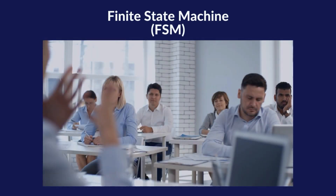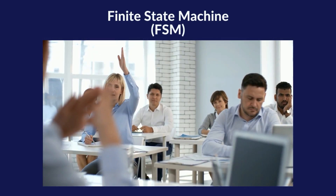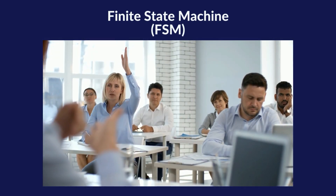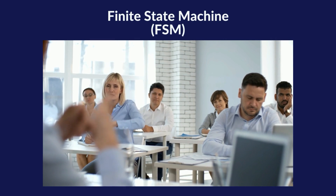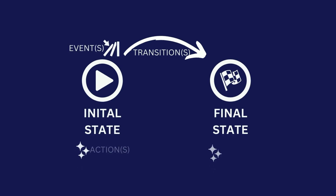If you've completed any at least intermediate programming course, you should be familiar with finite state machines. Here's a quick overview. A finite state machine represents states and transitions between them. There are two key states, initial and final, though the final state may be optional. Usually there will be many more states in between.